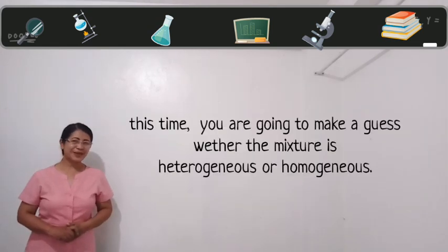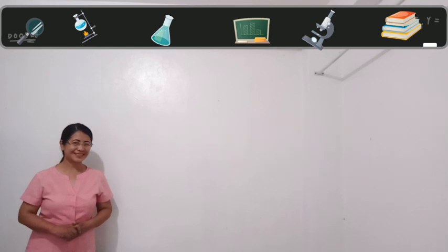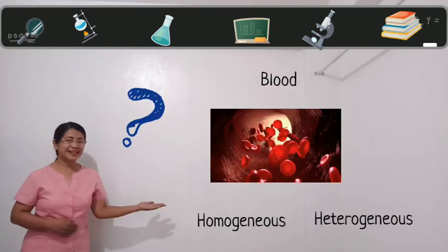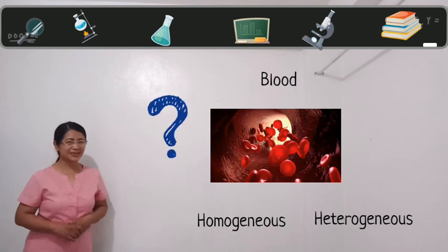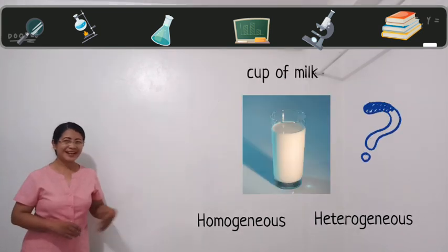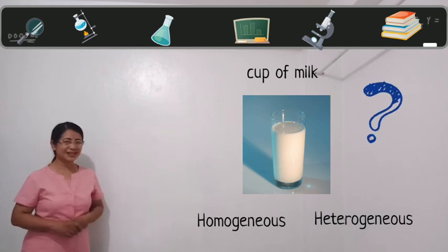This time you are going to make a guess whether the mixture is heterogeneous mixture or homogeneous mixture. Is blood an example of homogeneous or heterogeneous mixture? How about a cup of milk? Is it homogeneous or heterogeneous mixture?